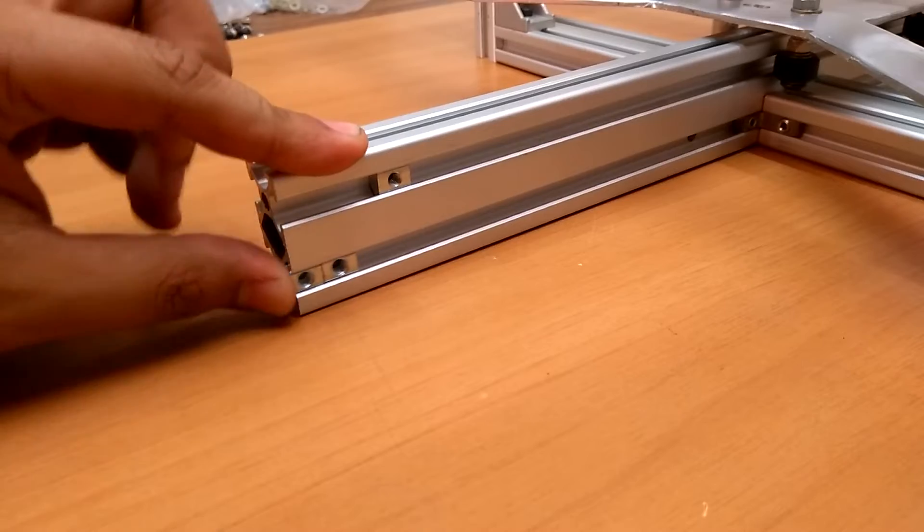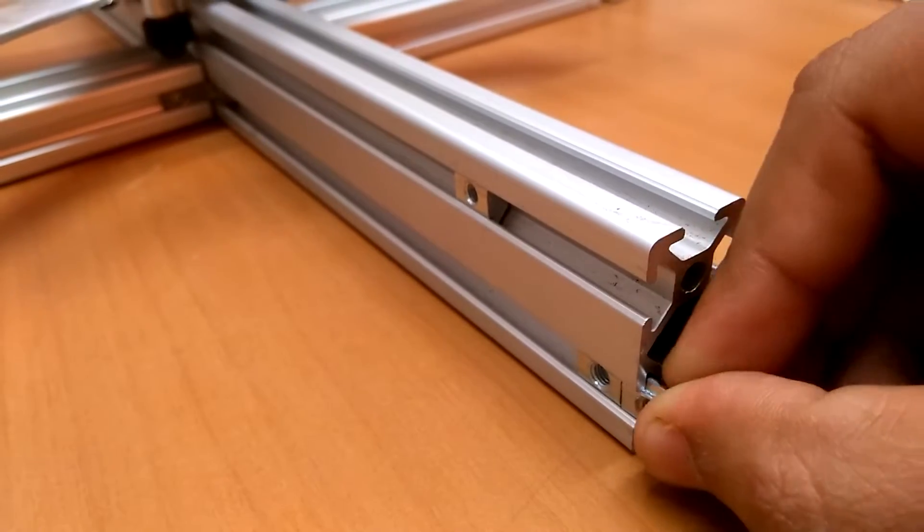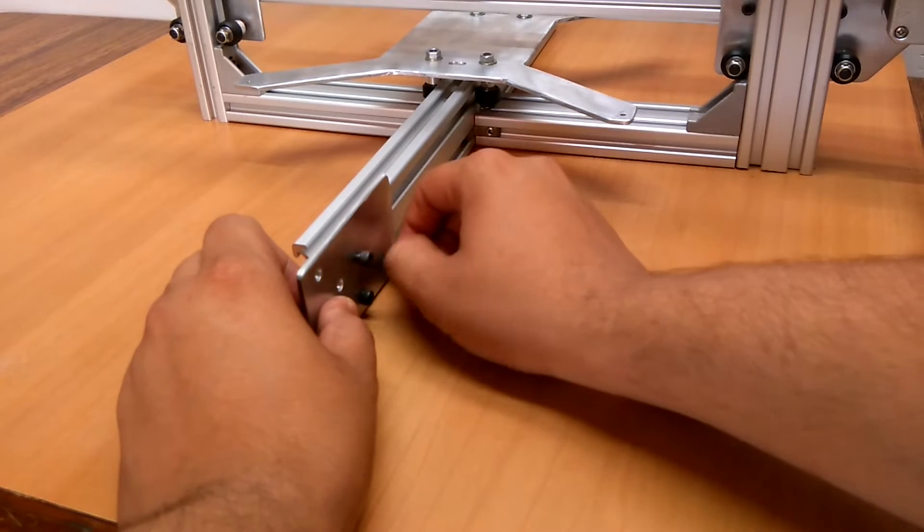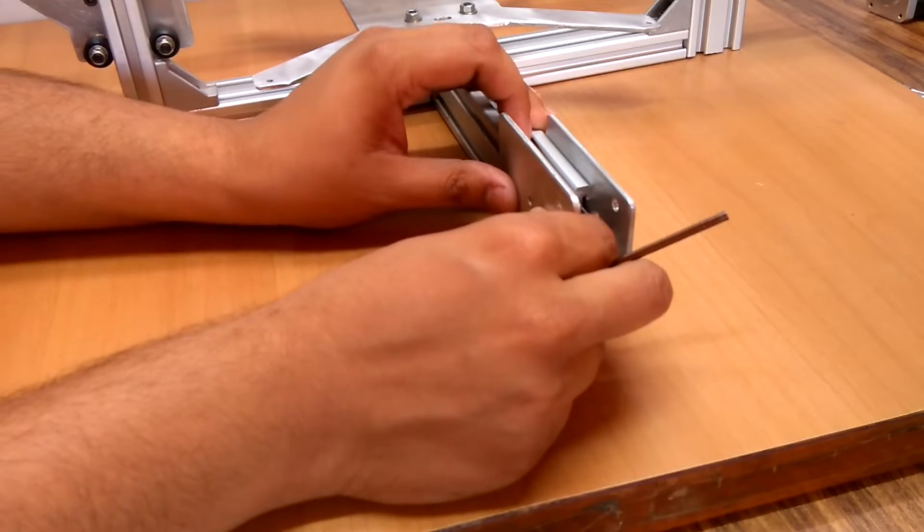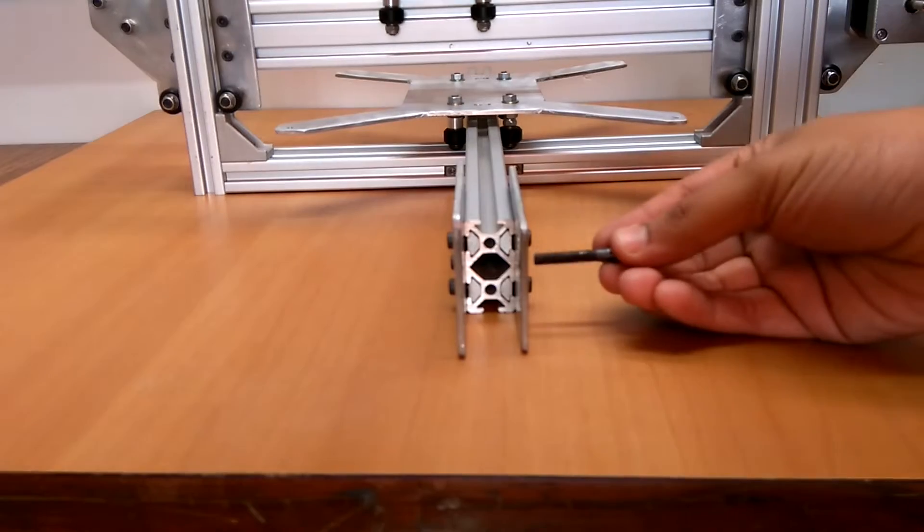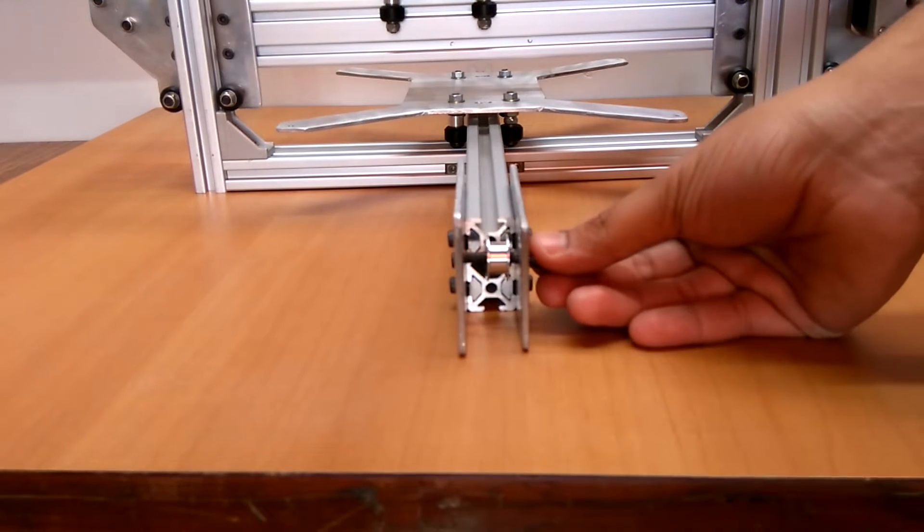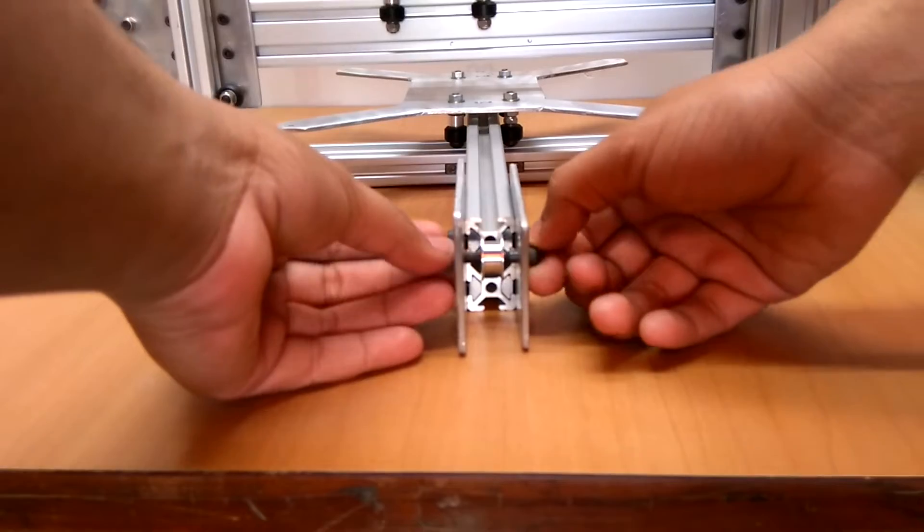I used sliding nuts and 4 millimeter bolts to attach the front y-axis gantry plates. I attached two 5 millimeter bow pulleys using 5 mm nut bolts to the plates.